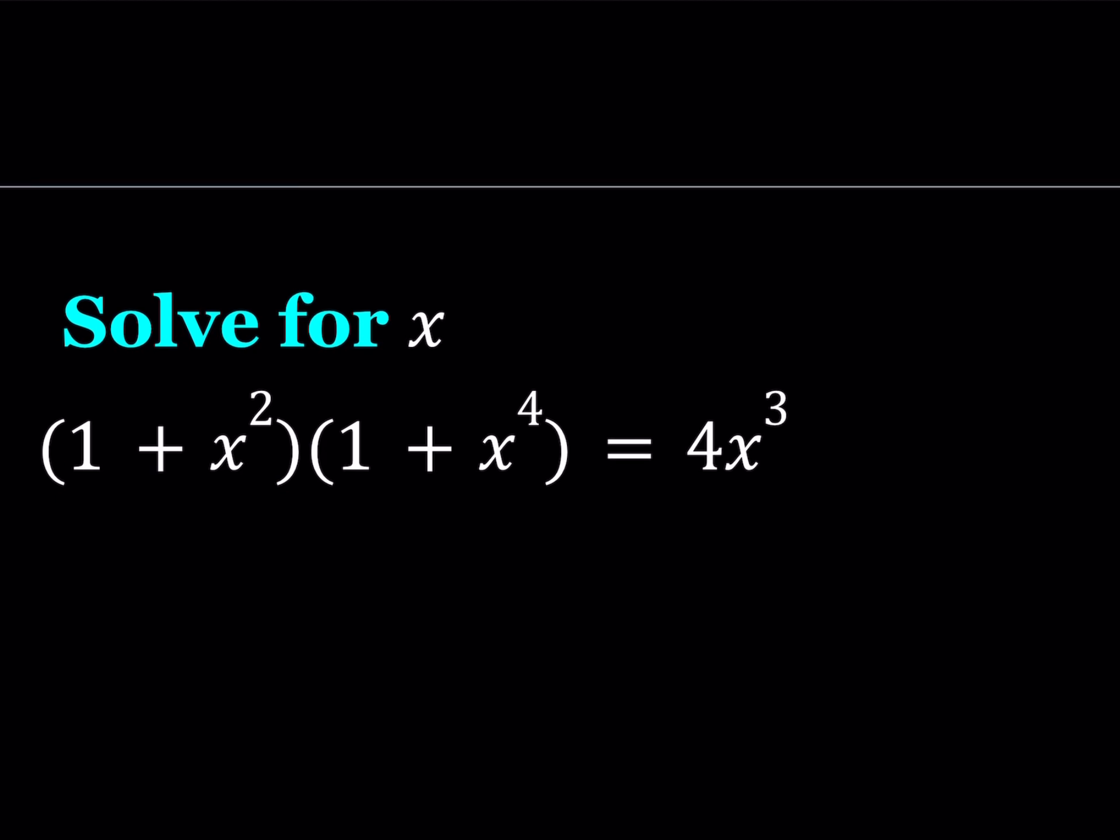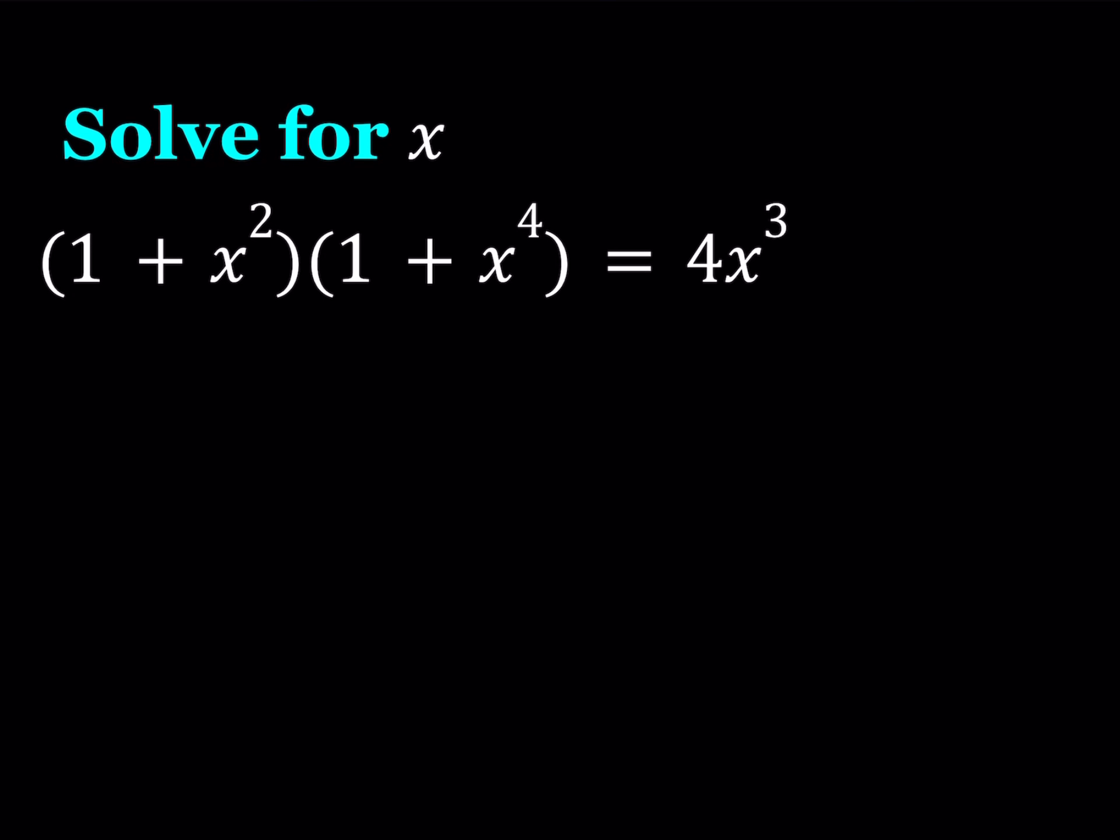So we're going to be solving this nice polynomial equation today. We have the quantity 1 plus x squared times the quantity 1 plus x to the 4th power equals 4 times x to the 3rd power. I'll be presenting two methods. Let's start with the first one. So the first method involves distributing everything. Let's go ahead and do that. We get 1 plus x to the 4th power plus x squared plus x to the 6th power equals 4x to the 3rd power.